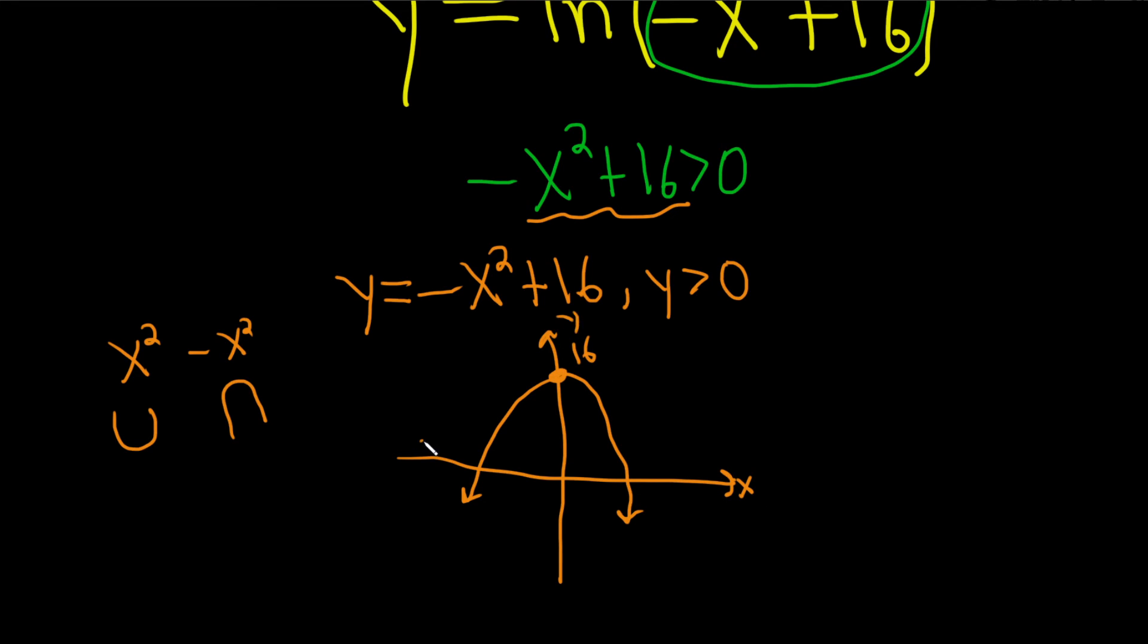So what are we looking for? We said we were looking for when y was positive. In other words, when are the y values positive? Well, here, everywhere above the x axis. So these are the x values for which the y values are positive.